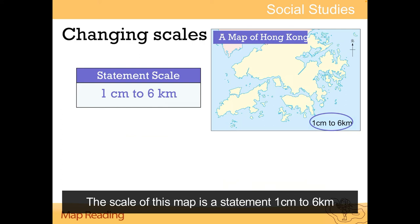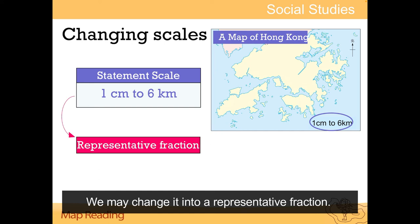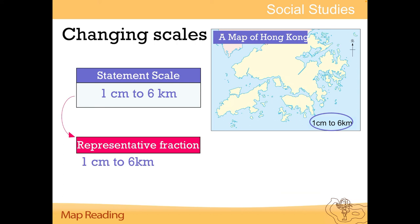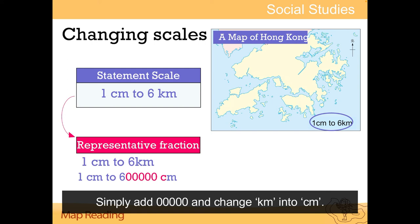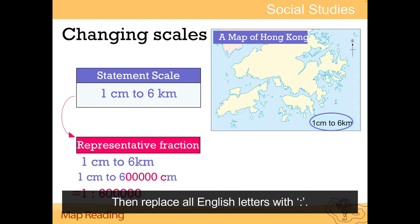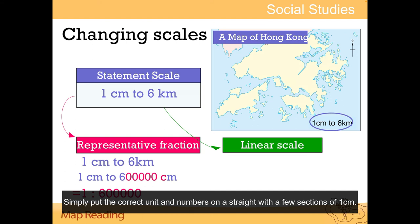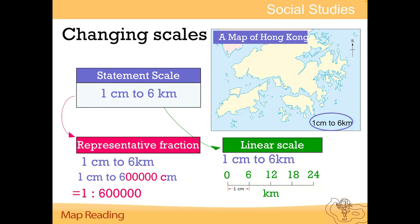1 cm on the map represents 6 km in reality. We may change it into a representative fraction by simply adding five zeros and changing km into cm, then replacing all English letters with a colon. We may also change it into a linear scale by putting the correct unit and numbers on a straight line with a few sections of 1 cm.